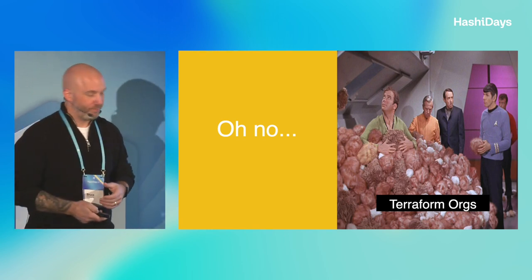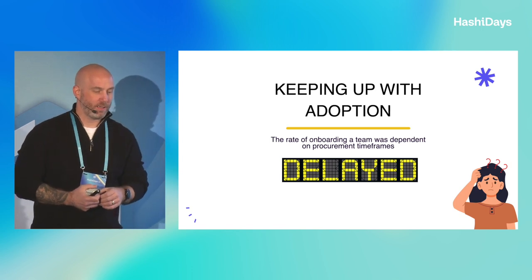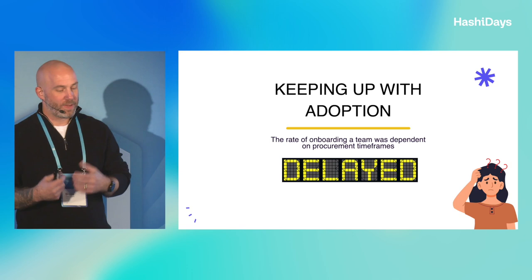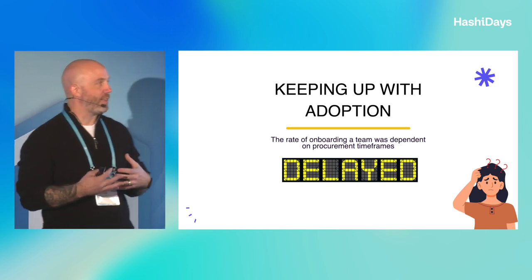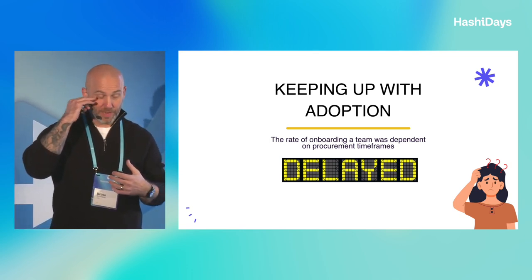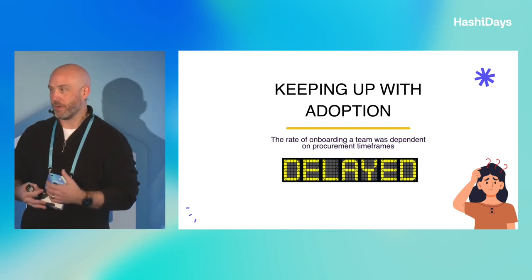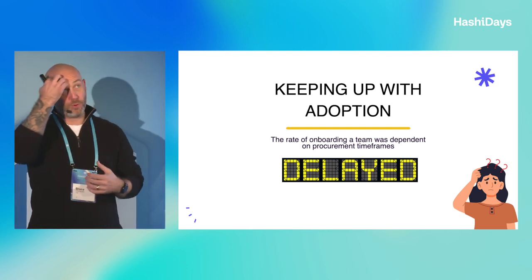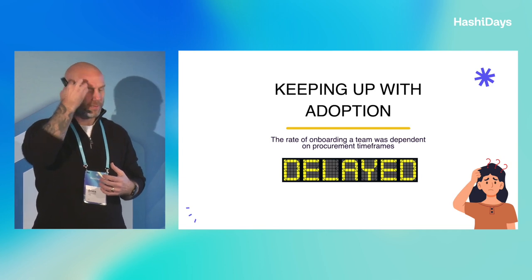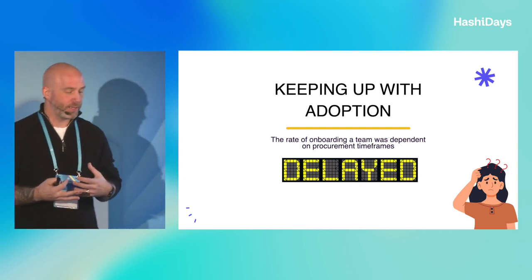This was because teams wanted to isolate their workloads — they didn't want concurrency issues with their runs, and they didn't want to share sensitive outputs or state with other teams. Because of this, we had an explosion of Terraform orgs; every single team had their own org. And with this organic adoption, we began to slow down the rate at which we could service those requests. With every new request, we would have to renegotiate the contract — this was before RUM, resources under management.